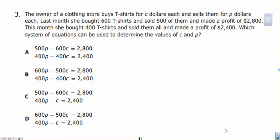Number 3. The owner of a clothing store buys t-shirts for C dollars each and sells them for P dollars each. Last month, she bought 600 t-shirts and sold 500 of them and made a profit of 2800. This month, she bought 400 t-shirts and sold them all to make a profit of 2400 dollars. Which system can be used to determine the values of C and P?